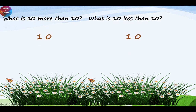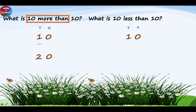Let's have a look at another example. What is 10 more than 10? Your number is 10. First, write the place values — 1's and 10's. The sum says 10 more than, meaning you are going to add to the 10's place. When you add to the 10's place, it becomes 2, and the 1's place remains unchanged. Your answer is 20. And what is 10 less than 10? Write the place values. The sum says 10 less than, meaning subtract from the 10's place. When you subtract the 10's place, it becomes 0, and the 1's place is already 0. So your answer is 0.